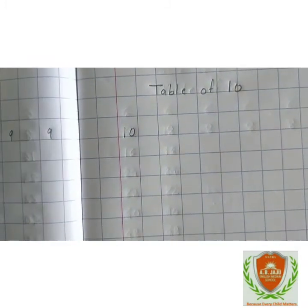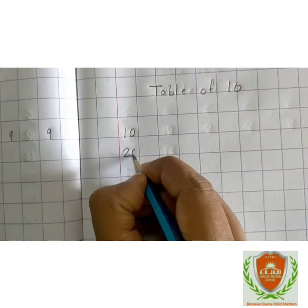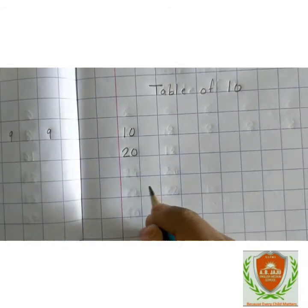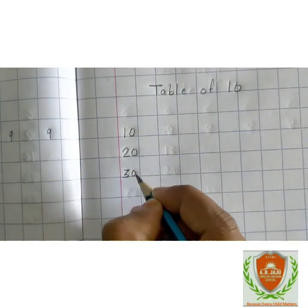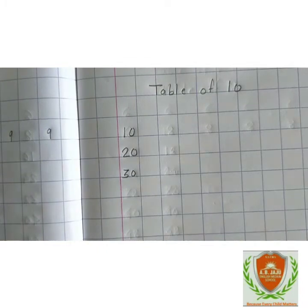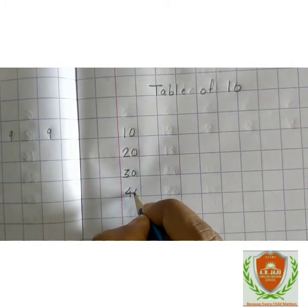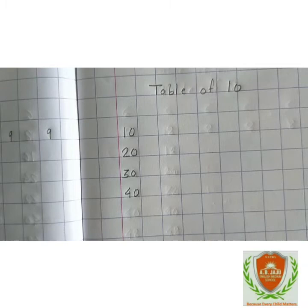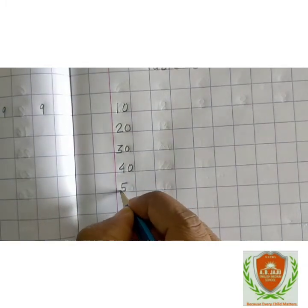10 twos are 20, 10 threes are 30, 10 fours are 40, 10 fives are 50.